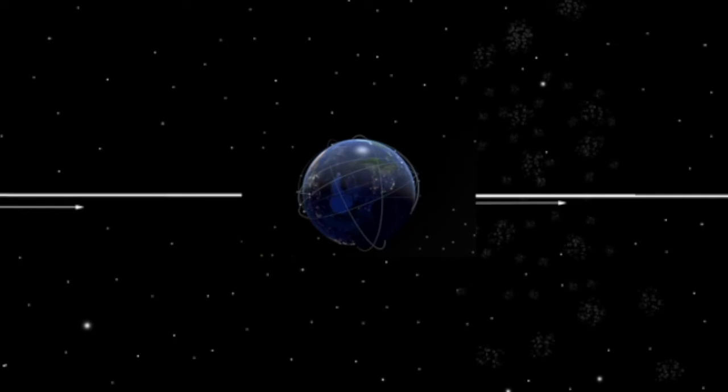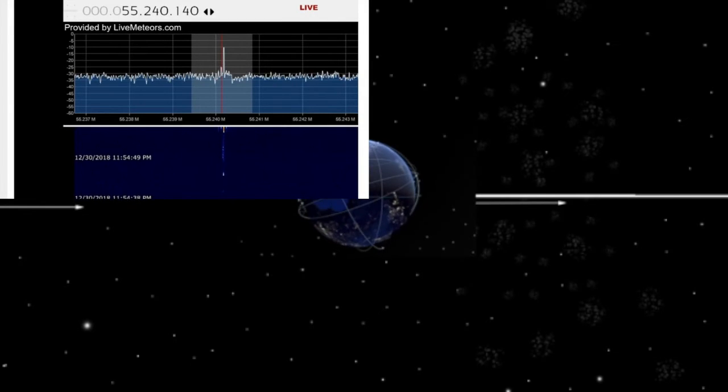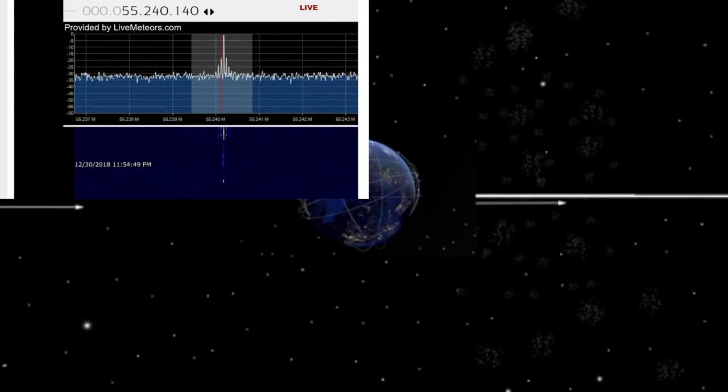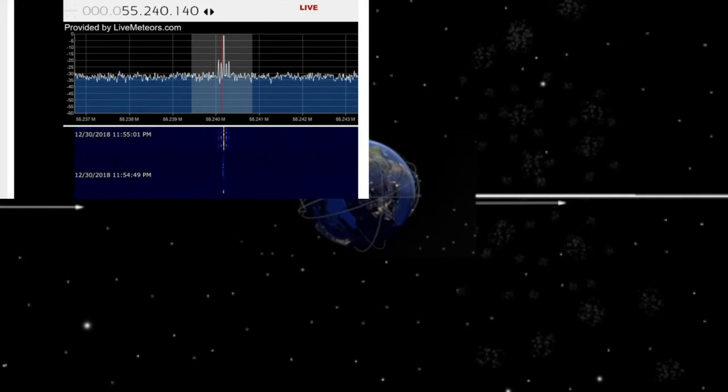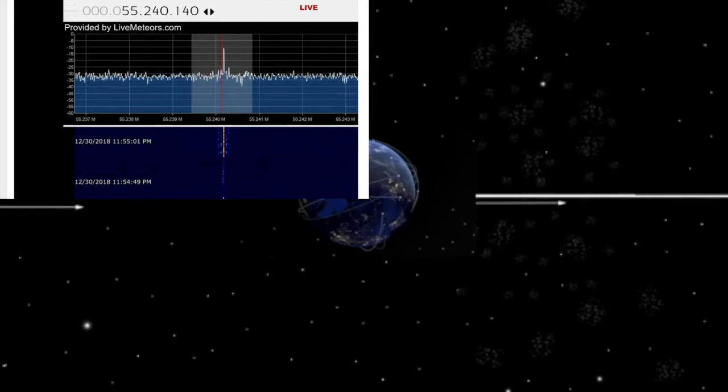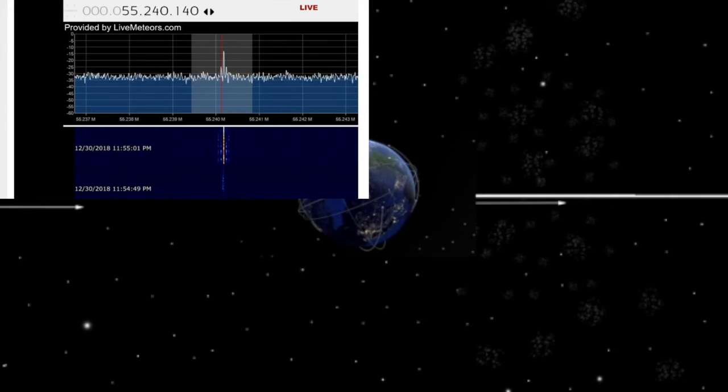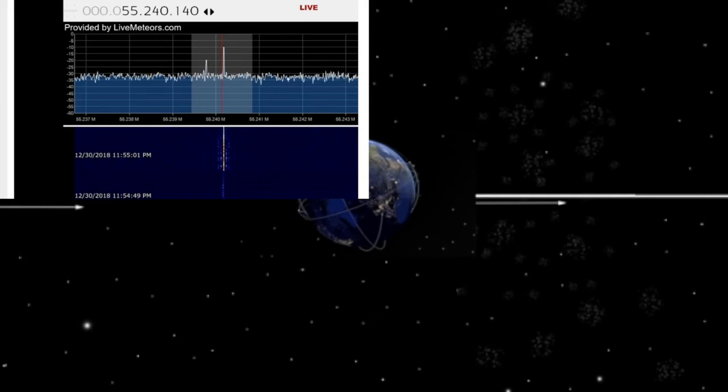But meteor impacts can still be picked up on the day side through other methods, such as radar. And radar confirms that on the day side that is forward-facing in the orbit, the planet gets just as many impacts of meteors into the atmosphere.